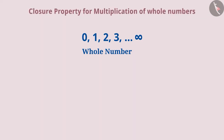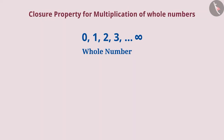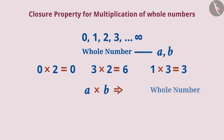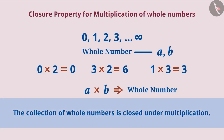The multiplication of two whole numbers is found to be a whole number. That is, the multiplication of any two whole numbers is always a whole number. Hence, we can say that the collection of whole numbers is closed under multiplication.